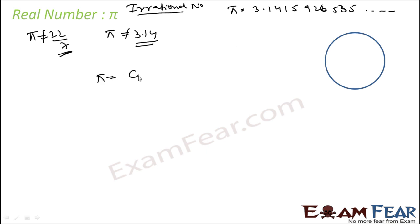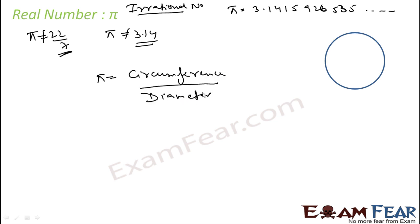Pi is nothing but circumference divided by diameter of a circle, because circumference is 2πR — that is Pi into 2R, which is Pi into diameter. So this is the value of Pi.